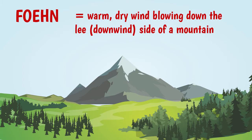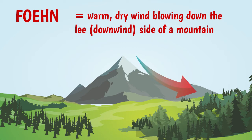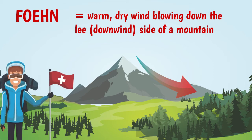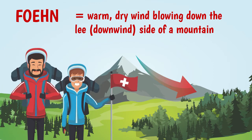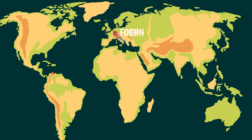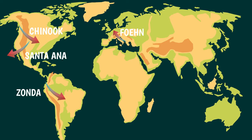The term foehn describes a warm, dry wind that blows down the lee or downwind side of a mountain. The term was first used to describe a wind that often blows in springtime in the alpine valleys in Switzerland and Austria. But the name is now used for a variety of dry, warm winds around the world, including the Chinook in the Rocky Mountains, the Santa Ana Wind in California, the Zonda in South America, and the Loo in India.